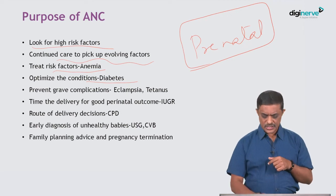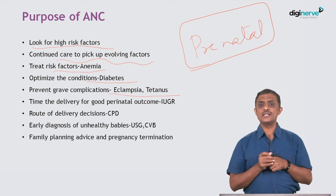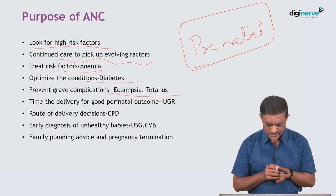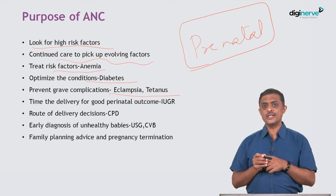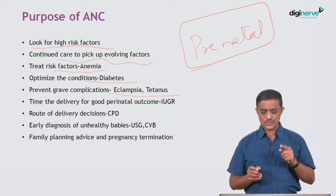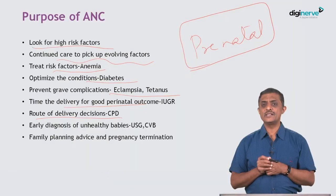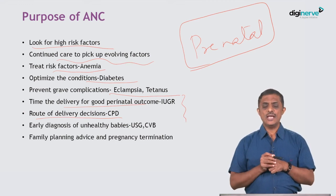Prevention of grave complications such as eclampsia and tetanus is another key purpose. Some of the measures taken during antenatal care can prevent serious complications. A vigilant attitude will also very effectively help us time the delivery and decide the route of delivery — should I deliver her at 34 weeks or wait till 38 weeks? Should she deliver vaginally or by cesarean? These decisions can be made when there has been good antenatal care.